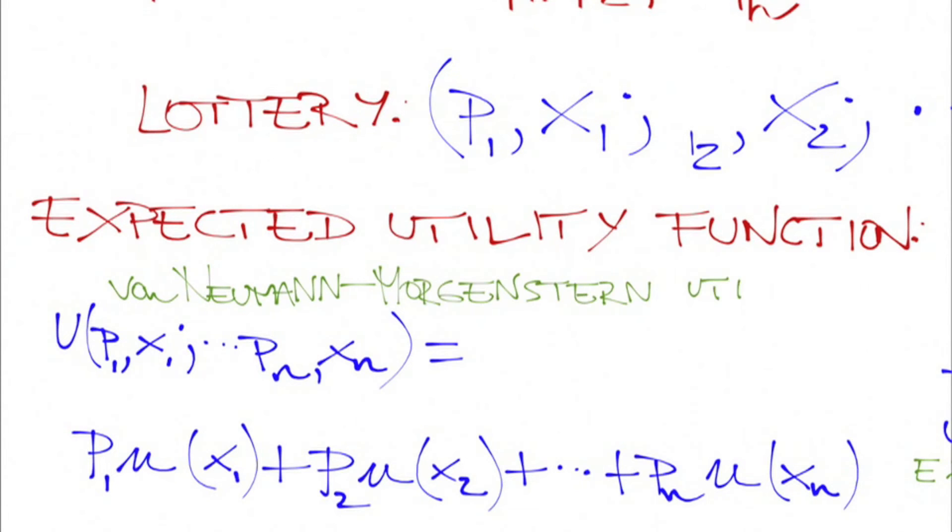An expected utility function is sometimes called a von Neumann-Morgenstern utility function, distinguishing it from the Bernoulli utility function. The von Neumann-Morgenstern utility function gives a decision maker's utility from a lottery. The Bernoulli utility function gives her utility from a sum of money.